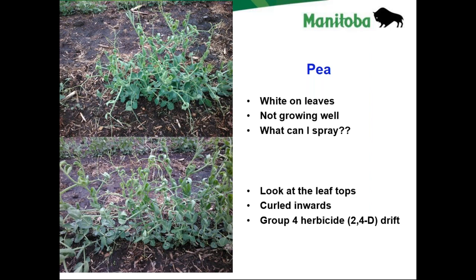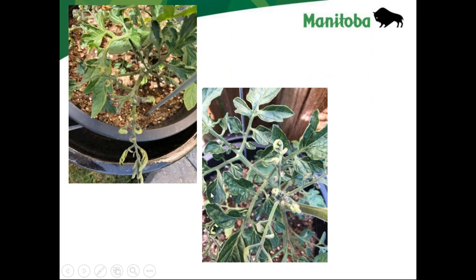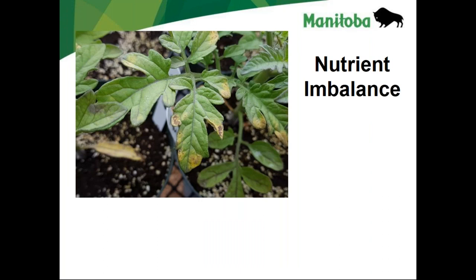Nothing the grower did could have prevented this herbicide drift — it requires neighbors who are careful and know where sensitive crops are. This happens not only with vegetable crops but also potatoes and other sensitive horticulture crops. If you suspect 2,4-D exposure, look at your grape leaves — they give a very good indication. Vikram also showed tomatoes exposed to the same 2,4-D type problem.